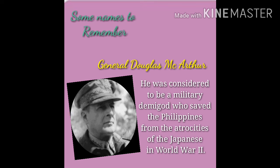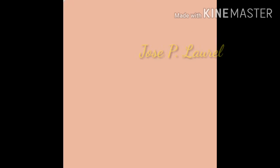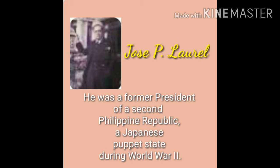Some names to remember: General Douglas MacArthur was considered a military demigod who saved the Philippines from the atrocities of the Japanese in World War II. Jose P. Laurel was a former president of the Second Philippine Republic, a Japanese puppet state during World War II.